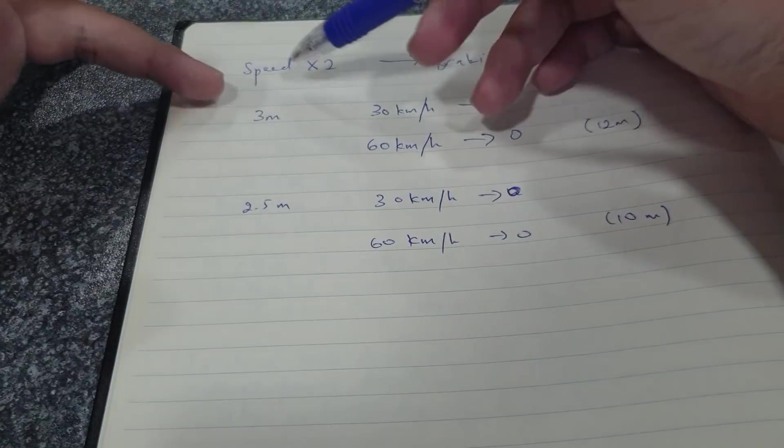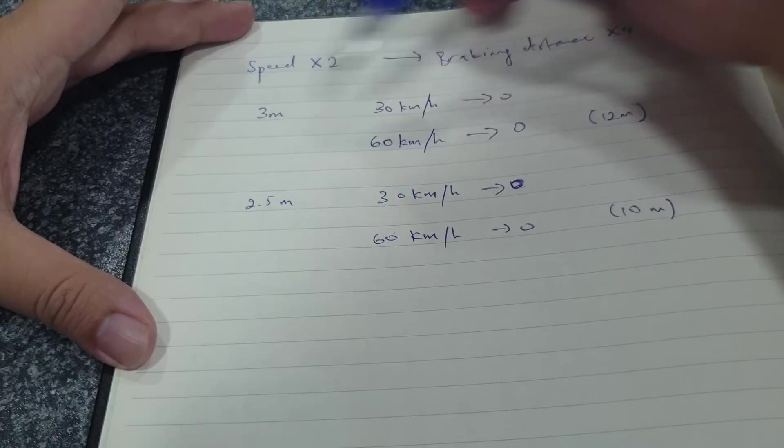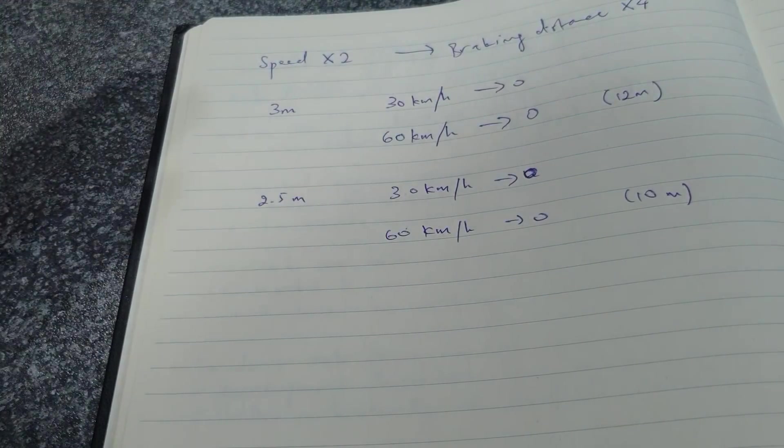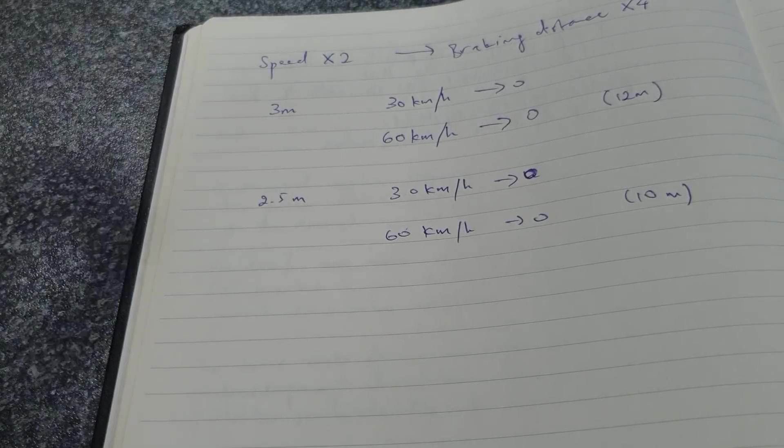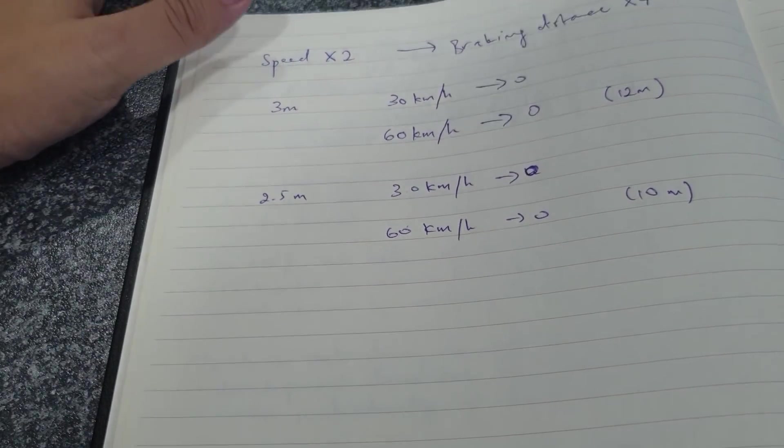This is the relationship: when you double your speed, your stopping distance increases by four. This is a mathematically proven relationship, and here I'm going to explain why.